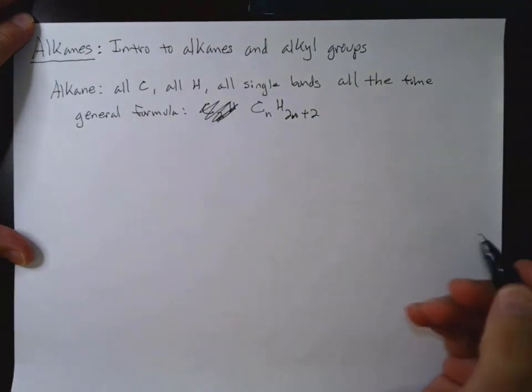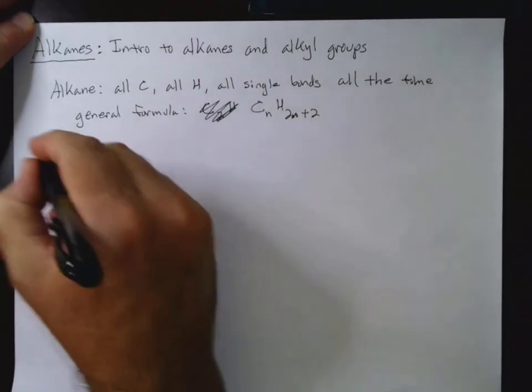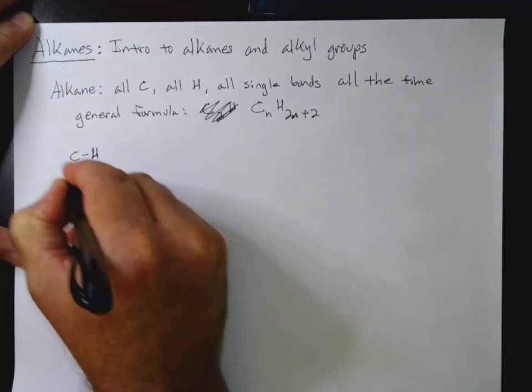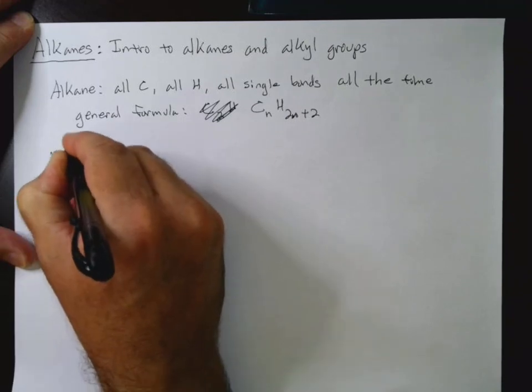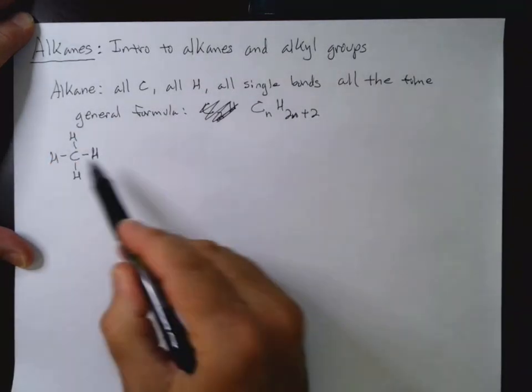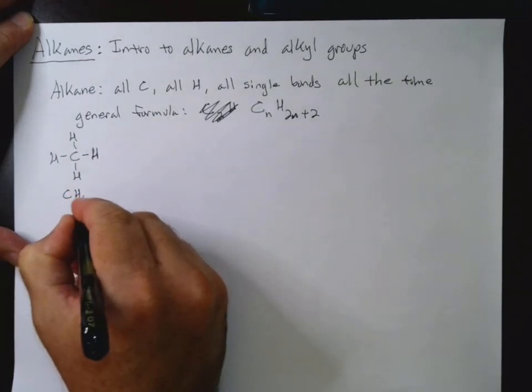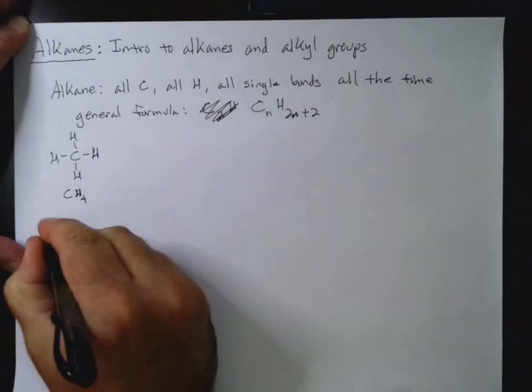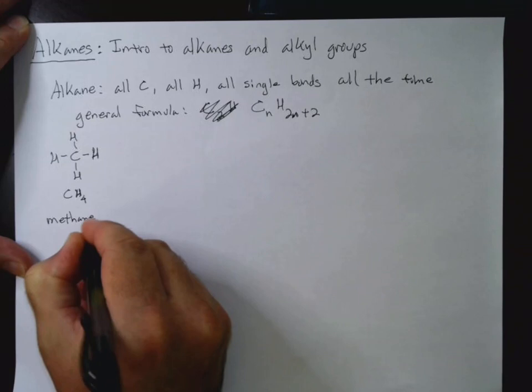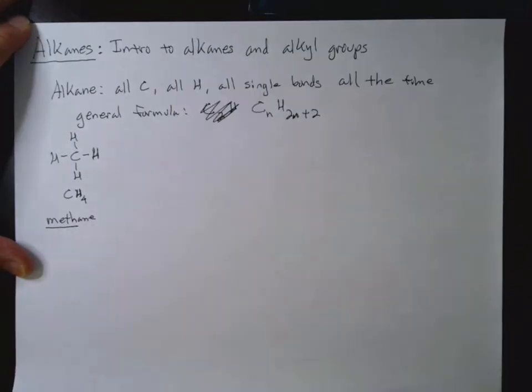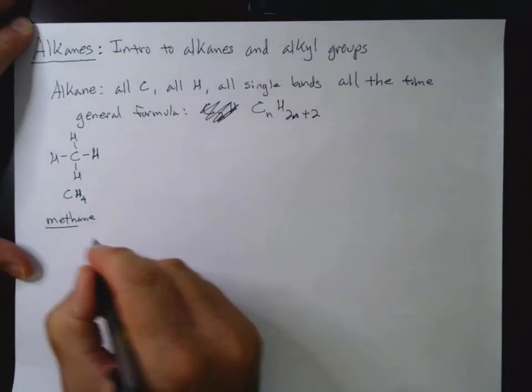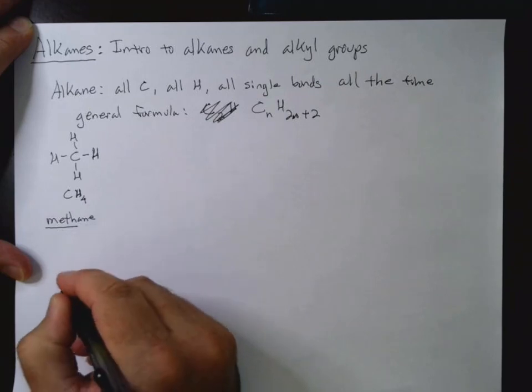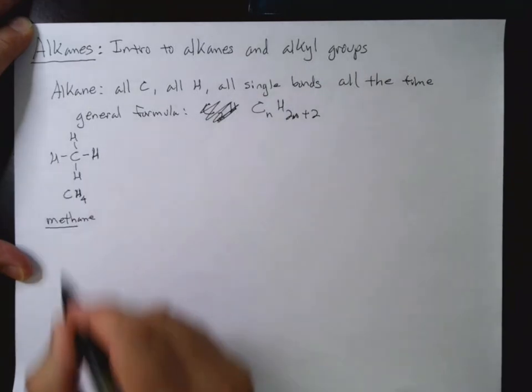Now, what does this look like? Well, we can start drawing out some structures here. And if our number of carbons is 1, so n equals 1, we will have CH4, because 2 times 1 is 2 plus 2 is 4. We call this methane. And notice that all of these have the suffix "-ane," and then we'll have a prefix that indicates the number of carbons. So meth means one carbon.